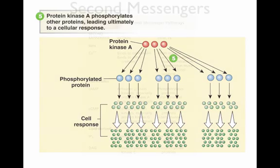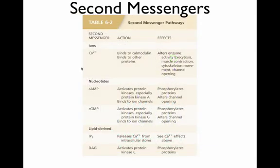There are other second messengers as well. Calcium can act as a second messenger — we'll see that a lot when we talk about muscle contraction. There are also other nucleotides like cyclic GMP, and lipid-derived molecules such as inositol triphosphate and diacylglycerol. They all do basically the same thing, and the more signal transduction examples you look at, you'll find they have a lot more in common than you might think.